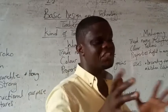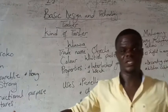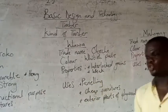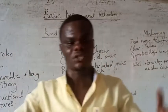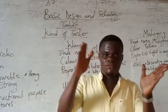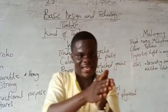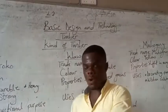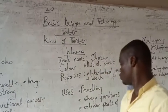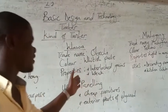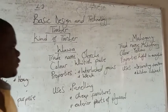Because guawa is weak, it is used for making cheap furniture. It is also used for making the exterior part of plywood — you know that plywood panels are flat boards that have been put together, so the exterior part of every plywood is made from guawa. It is also used for making panels.